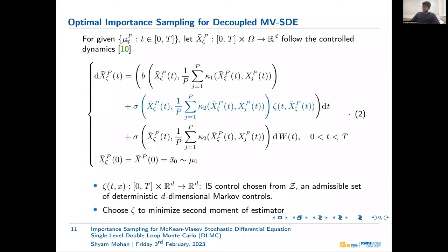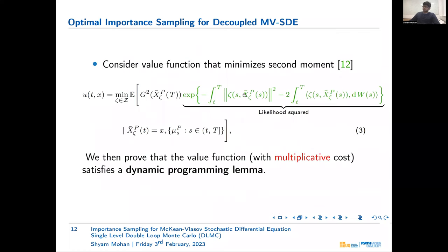To derive the optimal change of measure, for a given empirical distribution we denote by X-bar-zeta the controlled dynamics, where there is an extra term in the drift aimed at pushing the dynamics towards the rare event. This control is chosen from an admissible set of deterministic D-dimensional Markov controls. We choose zeta to minimize the variance of our estimator, equivalently the second moment, and this gives us the definition of our value function.